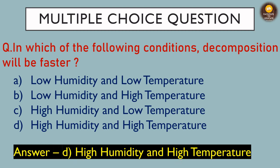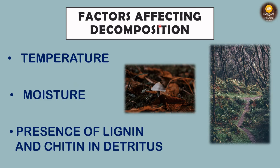Now let's discuss the factors that affect decomposition. First is temperature — higher temperature results in faster decomposition. Next is moisture — more moisture in the environment leads to faster decomposition. Also, the presence of lignin and chitin in detritus slows decomposition, since both are very complex substances. So for faster decomposition, high temperature, high moisture, and lower lignin and chitin content in the detritus are required.